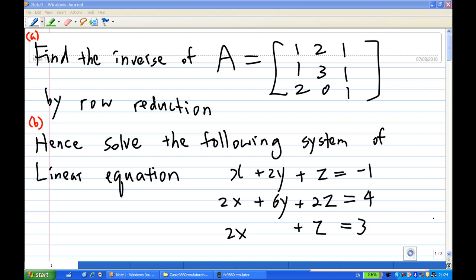Hi, for this recording, I'm going to show you how to do the second part of this problem. The first part is finding the inverse of A = [1,2,1; 1,3,1; 2,0,1] by row reduction.